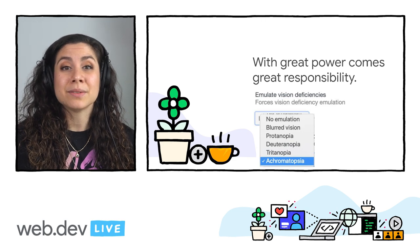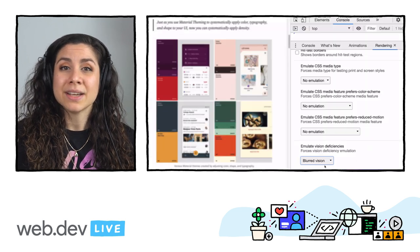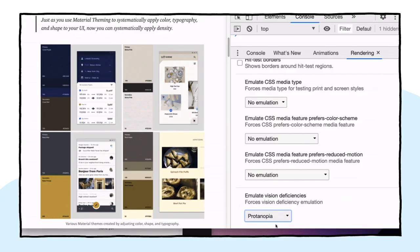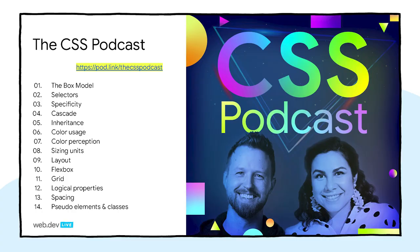Chrome 83 launched with some new accessibility testing features that allow for visual accessibility testing. Through DevTools you can examine if your UI works for users with various vision deficiencies like blurred vision and four different types of colorblindness. We're actually going to have Paul Lewis come on and walk through that. I've also really been enjoying your new CSS podcast with Adam Argyle — it's been really interesting to go through step by step and learn the fundamentals. If you haven't seen it yet, check out the CSS podcast.